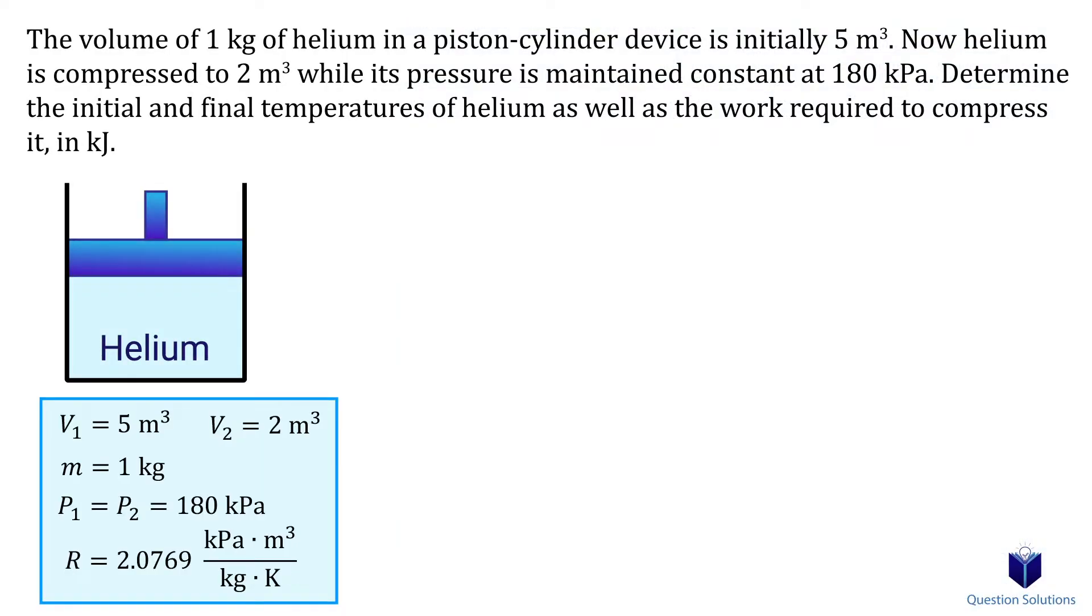Now let's find the initial temperature. To do so, let's write our ideal gas equation. Since we are looking at everything at the initial state, I will use a subscript 1 for the variables. Let's plug in our values. Now we can solve for the initial temperature.